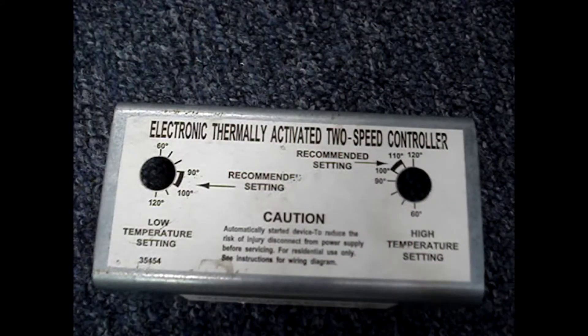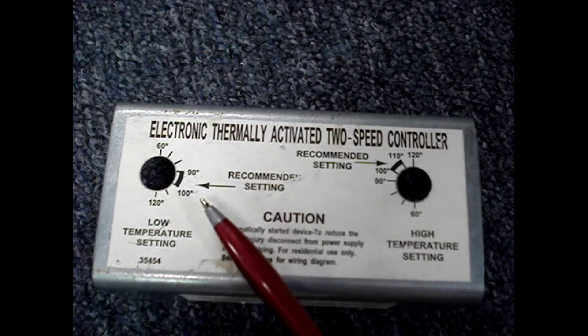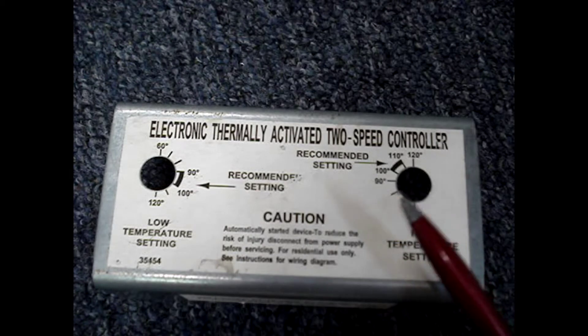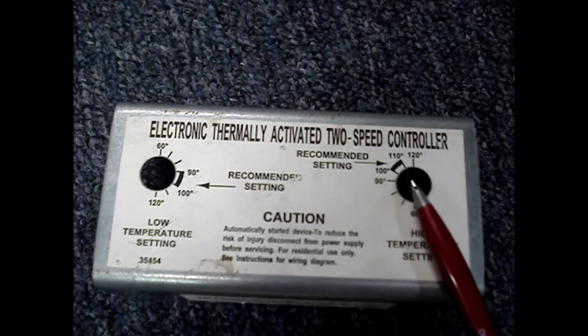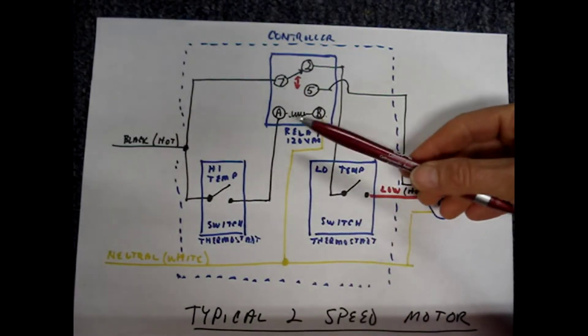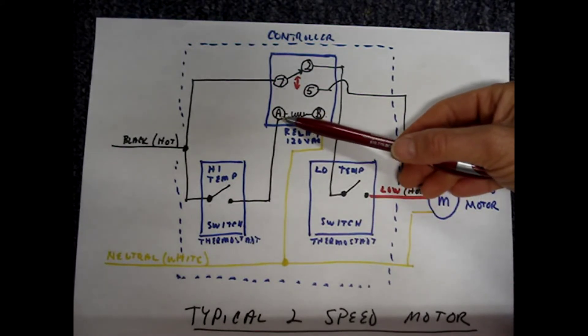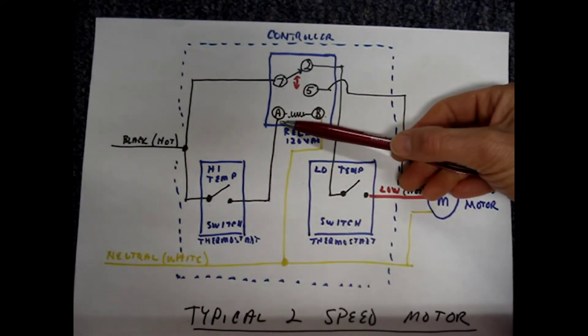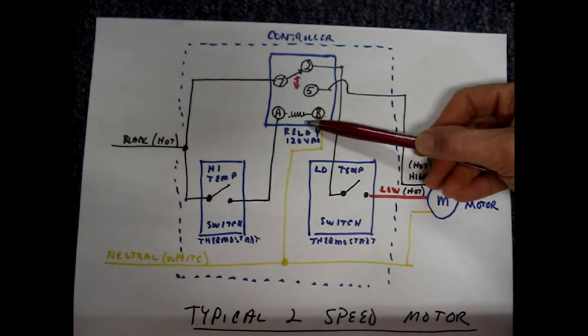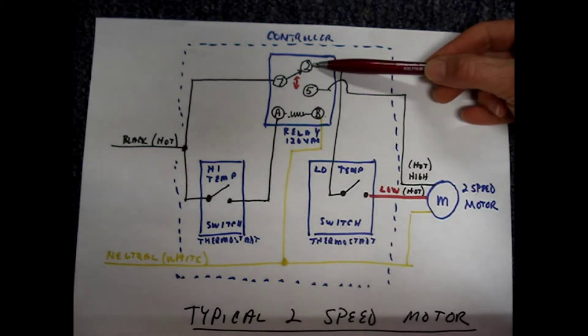Let's say that the fan is running on low speed because the attic temperature is between 90 and 100 degrees. And then the temperature increases to over 100 degrees. The high temperature switch closes and the hot is now present at terminal A on the coil of the relay. This energizes the relay and causes the contacts to change state.